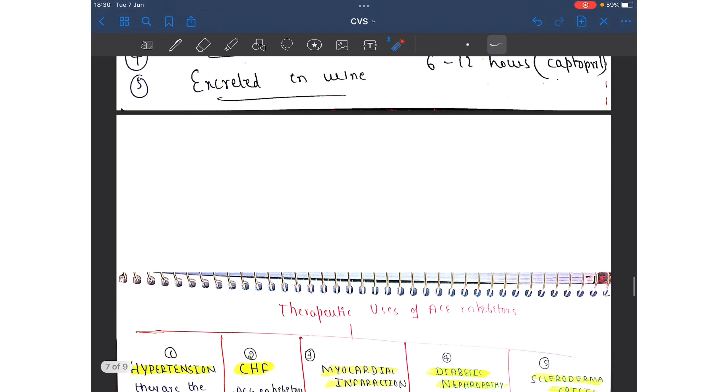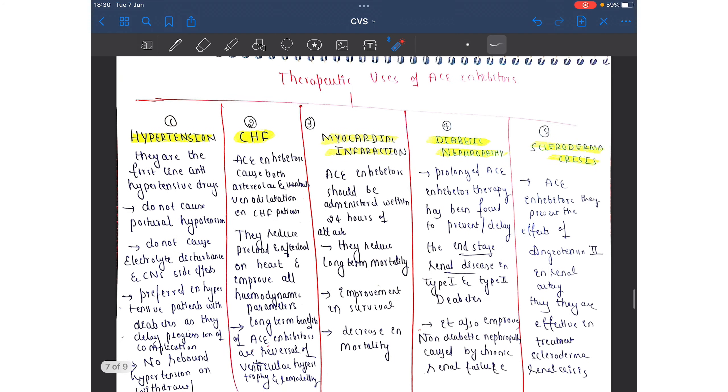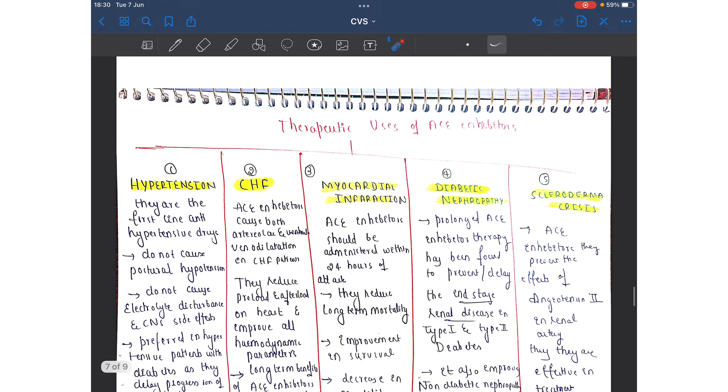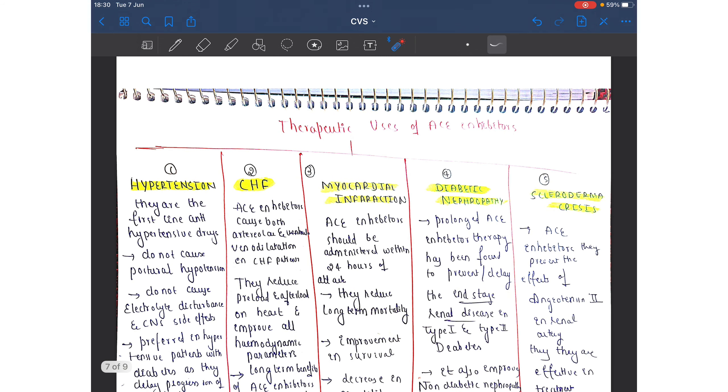This is the pharmacokinetics. Next we will talk about the therapeutic uses of ACE inhibitors. First and foremost, they are used as the first-line antihypertensive drug in case of hypertension.